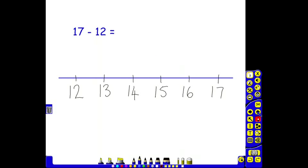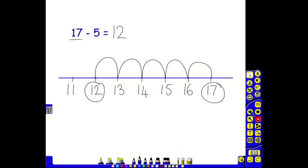This next example is counting forward. We've now got 17 take away 12. The numbers 12 and 17 are quite close together, unlike 17 and 5. 17 and 5 are quite a long way apart in comparison.